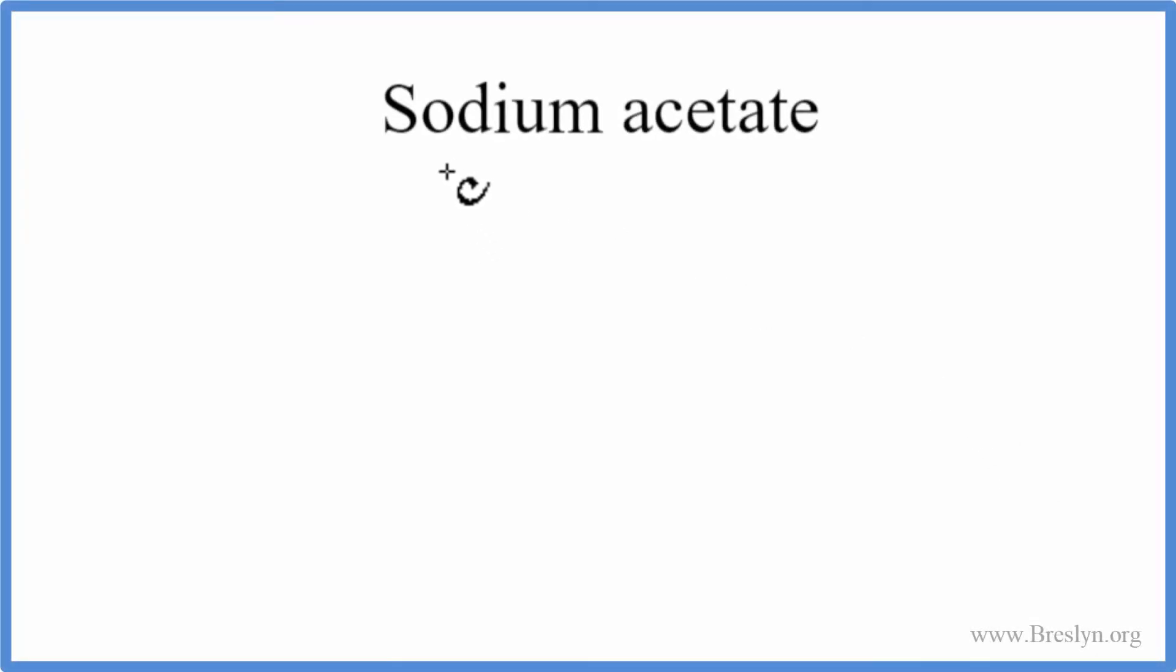To write the formula for sodium acetate, we look up sodium on the periodic table, that's Na, and then acetate, that's not on the periodic table. You see this A-T-E here, that means it's a polyatomic ion.